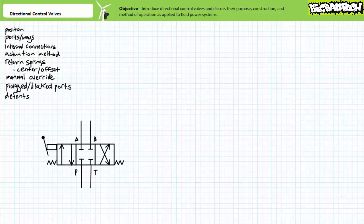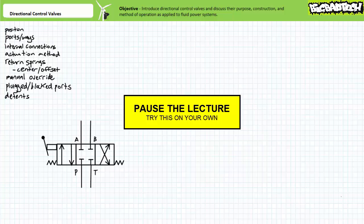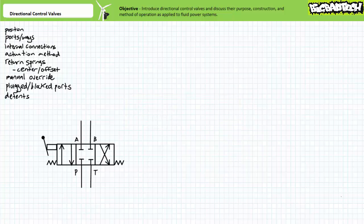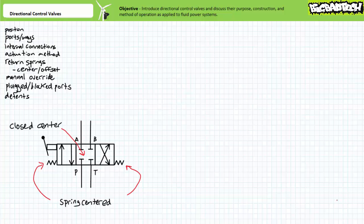This particular valve is a three-position, four-way, spring-centered, manually actuated directional control valve. Two opposing springs serve to center this three-position valve into what is known as a closed-center position — one of many commonly available center positions. The closed center serves to disconnect all passages from one another. An operator can use the manual lever to actuate the valve into the straight-through position or the cross-connect position.